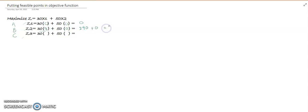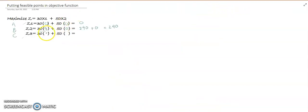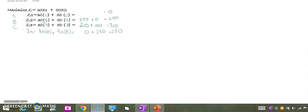This will become simply 240 plus 0 equals 240. For the objective function, we have corner point C: 7,2. We are going to put 7 and 2, so we will get 210 plus 100 equals 310.